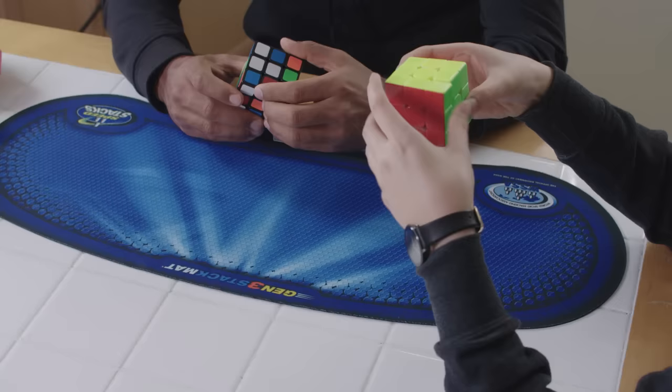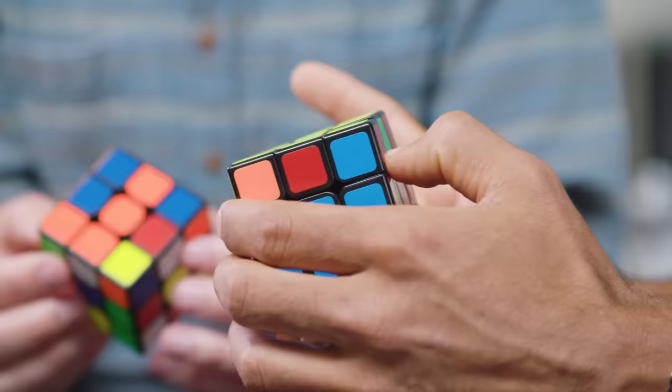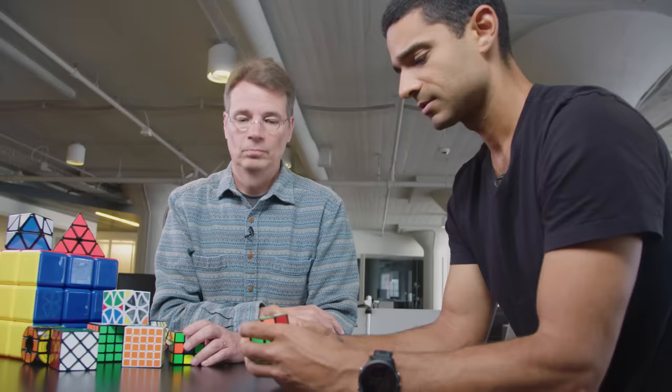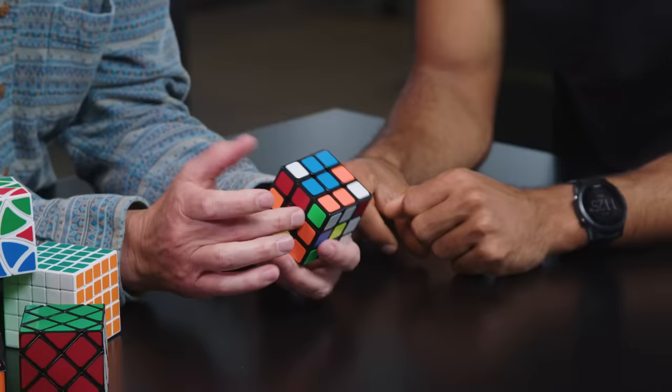So given what we've learned about speed cubing, what is the lower limit? How fast can we go? To figure that out, it helps to understand some of the math behind the cube. And for that, we turn to computer scientist Tom Rokicki.